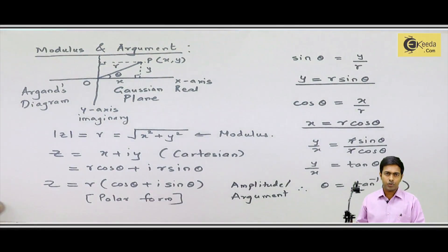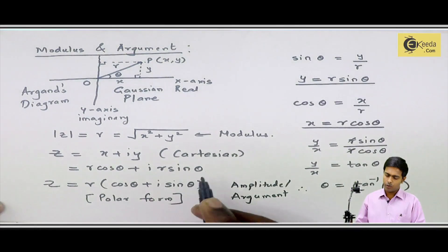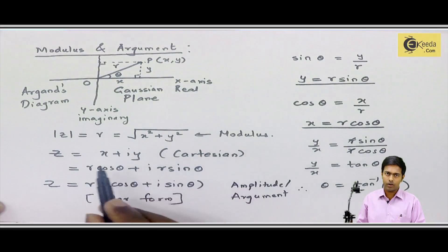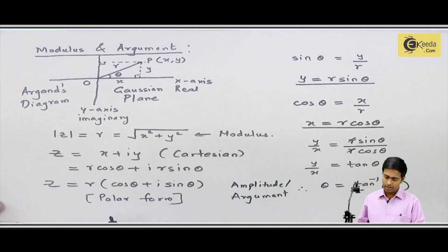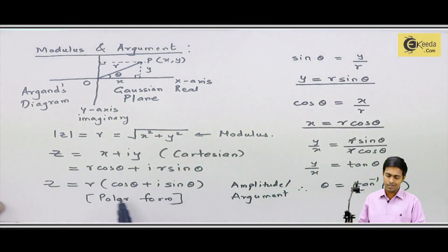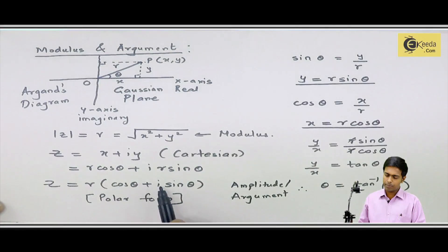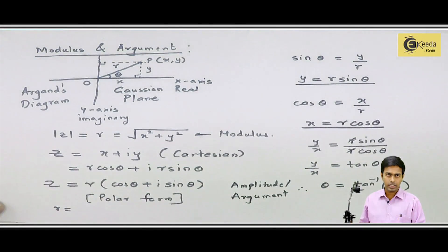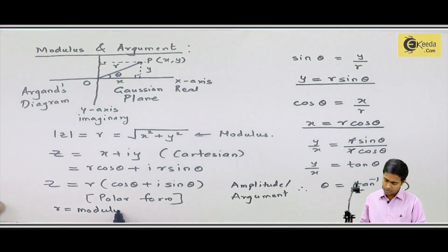We have seen two forms of a complex number: the Cartesian form and the polar form. The polar form is z = R(cos theta + i sin theta), where R is the modulus of the complex number.